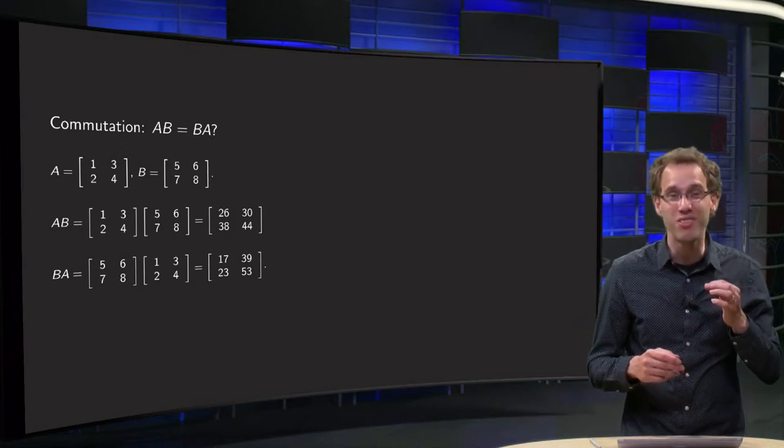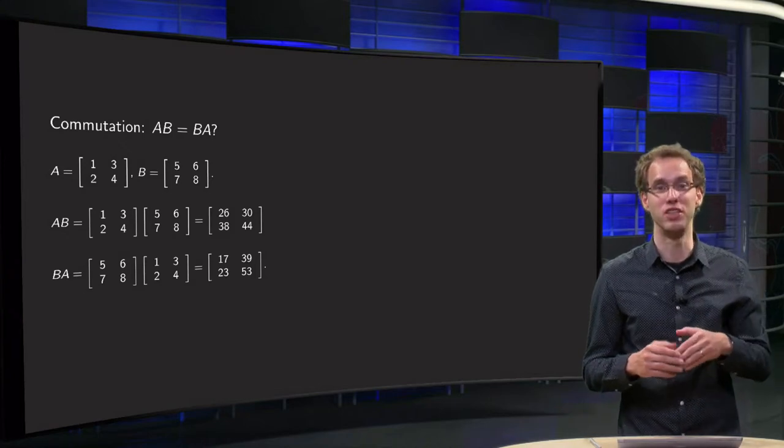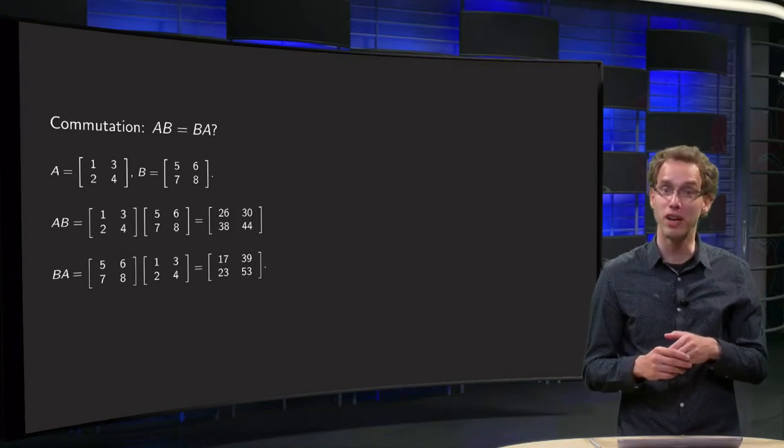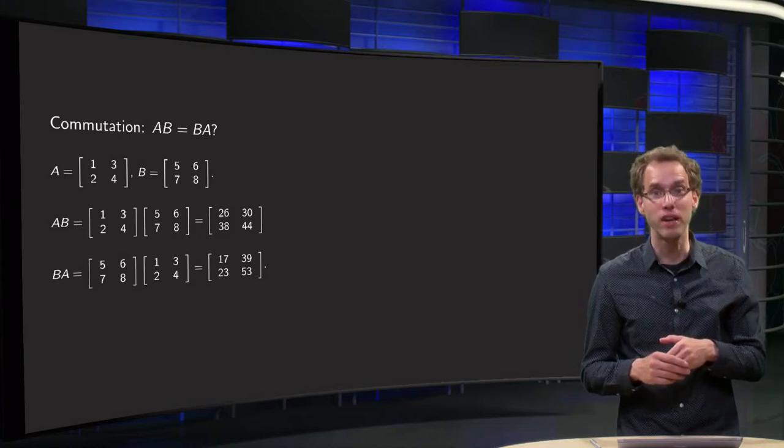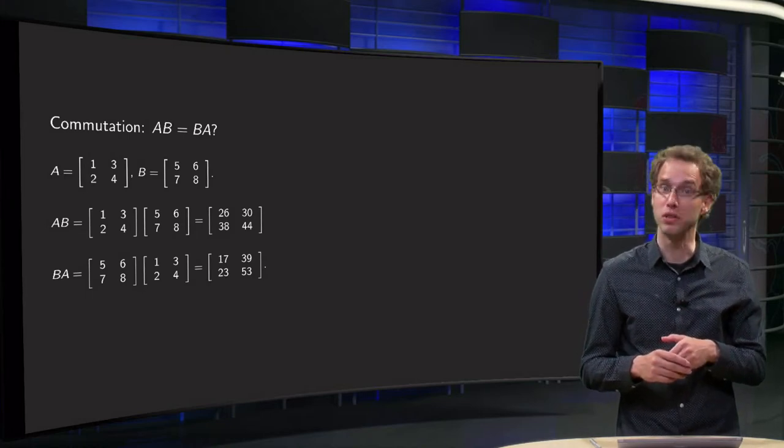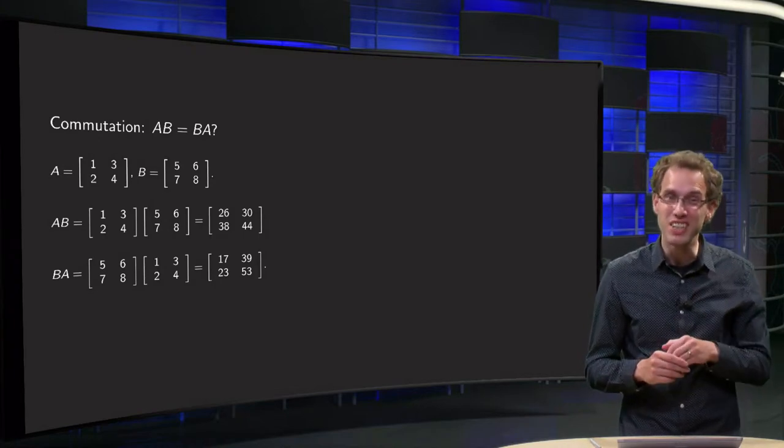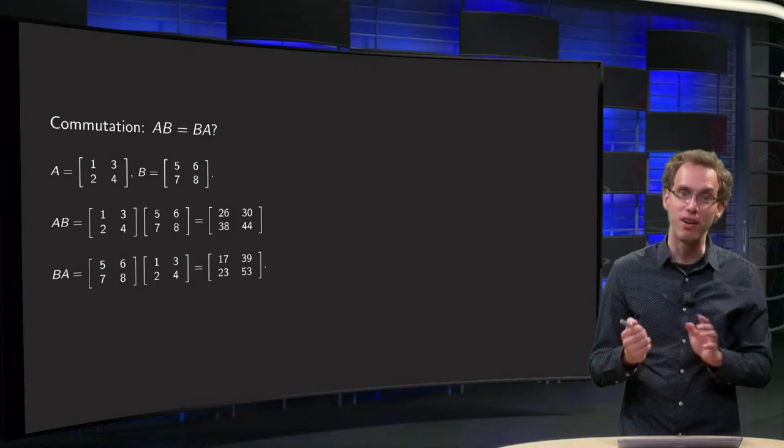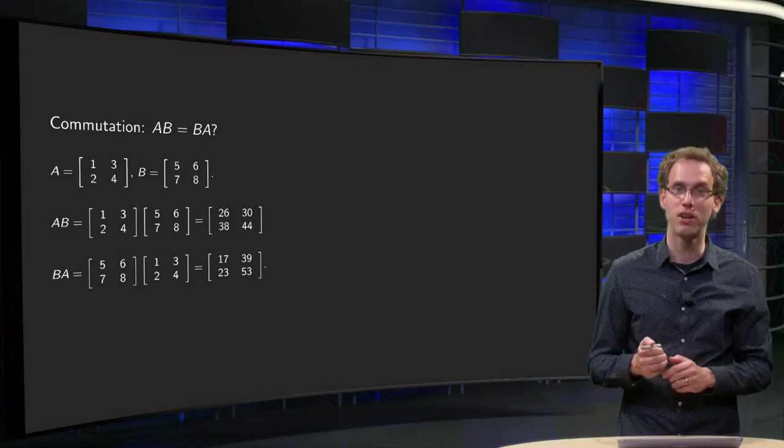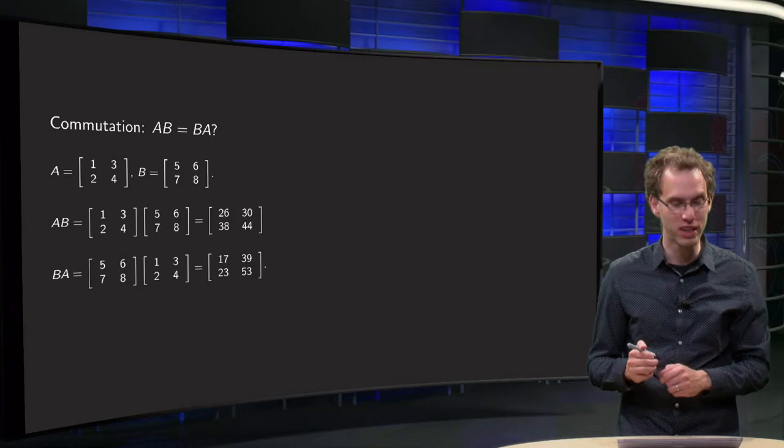But what if both would be square matrices, say 2 by 2 for both A and B? Then both A times B and B times A will yield a 2 by 2 matrix. But will they be the same? Well, let's find out. So here we have two matrices, A and B, chosen completely arbitrarily.